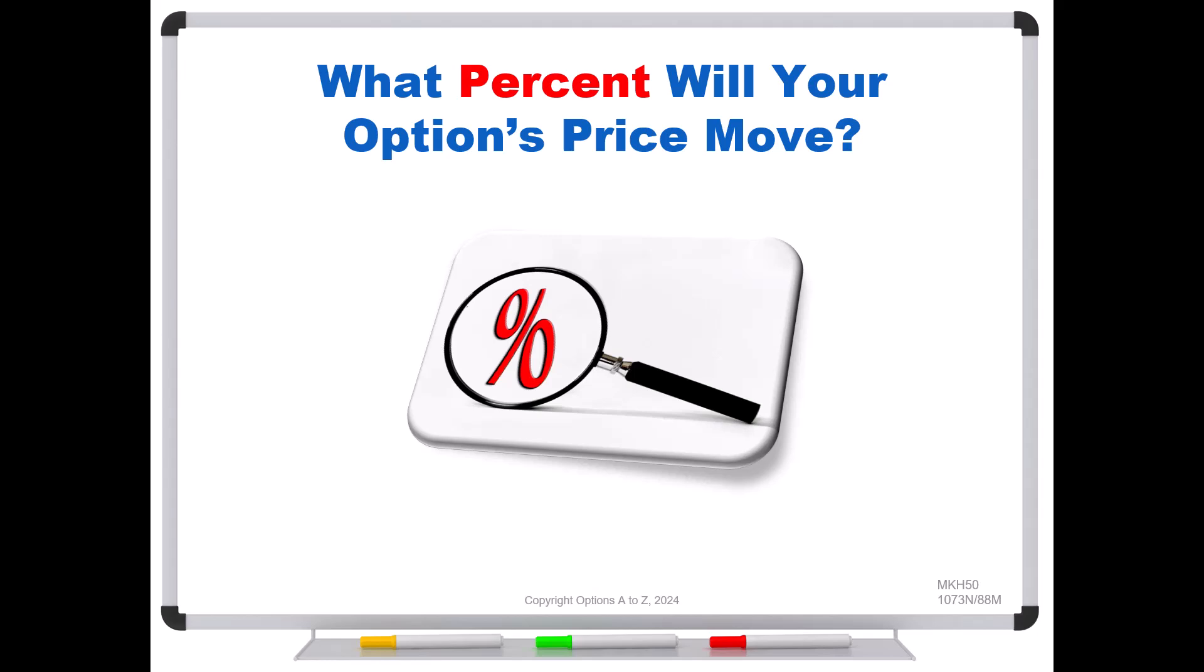it seems like you should be able to take delta divided by the option's price. Because the delta tells us by how much the option's price will move. So if you divide those out, that should be your formula.